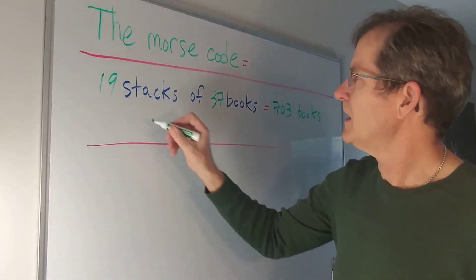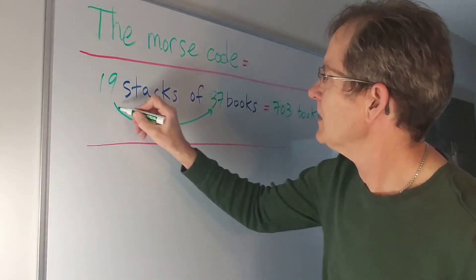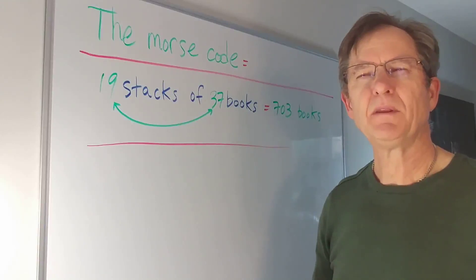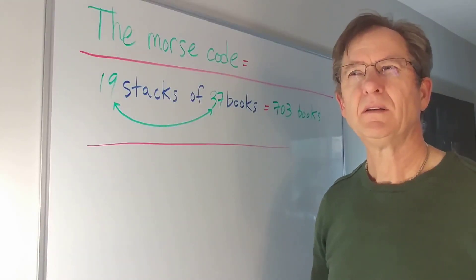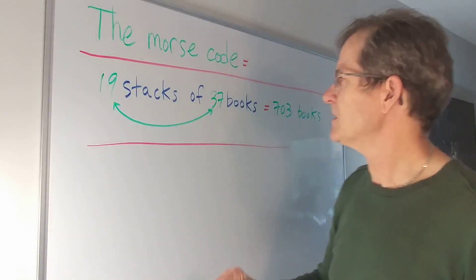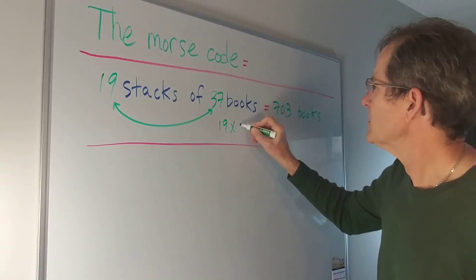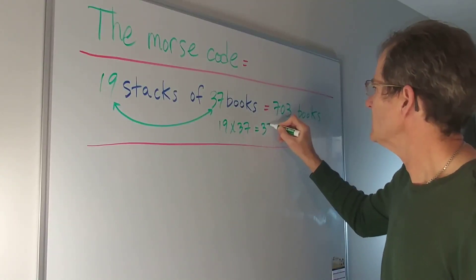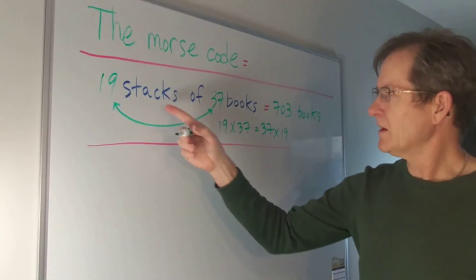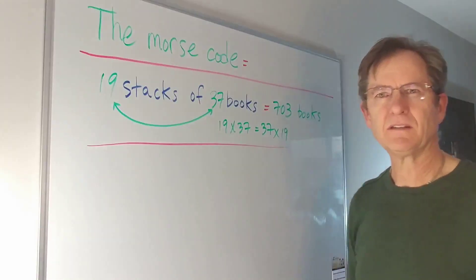But what if you had instead the opposite—37 stacks of 19 books. Just think about the stacks. Would that be the same number of books? You wouldn't think so. But actually, of course it is because of the commutative property of math. 19 times 37 equals 37 times 19. We know it's true, but when you think about books or objects, it doesn't seem that obvious, does it?